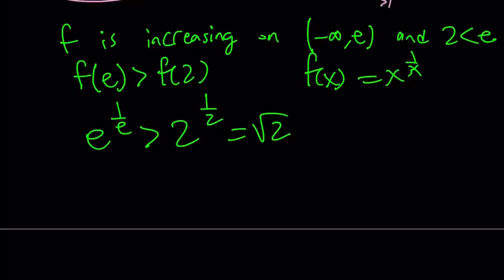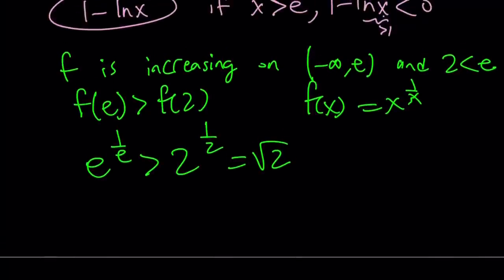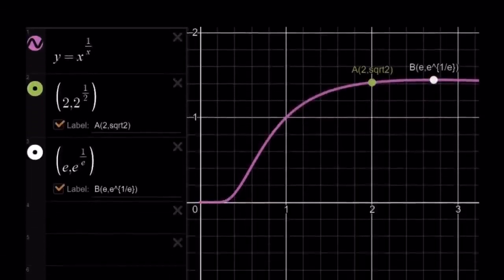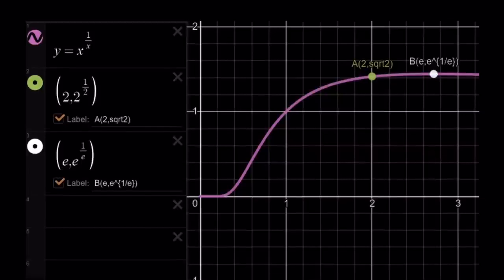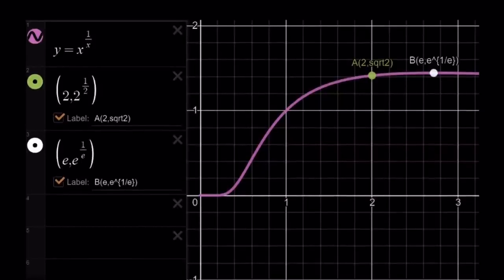That's interesting. Let's go ahead and check out the graph now, and you'll get a better picture. Here's the graph of y equals x to the power of 1 over x. You can see that our function is increasing for x values that are less than e. So it means that the y value at 2 is going to be lower than the y value at e. We're looking for the larger value, and that is going to be e to the power of 1 over e in this case.